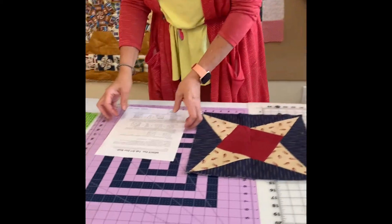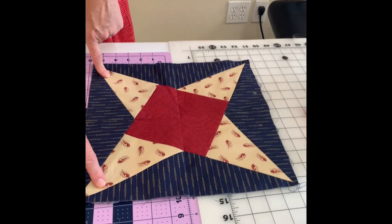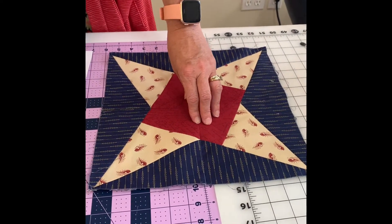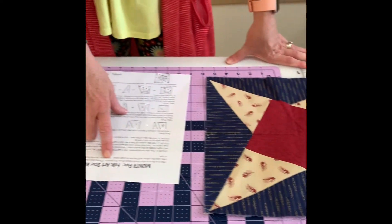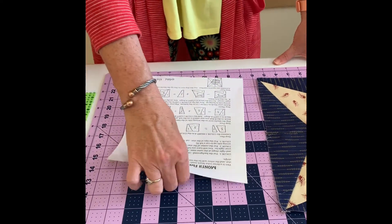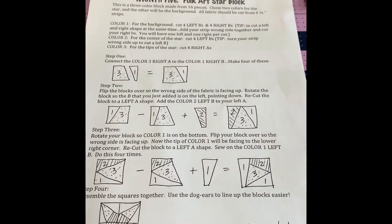This block is going to have three different colors: a background color, the star tips color, and then the inner square. And what you are going to need are 16 pieces. And here is the directions. And I will take a picture of that. You can download that.